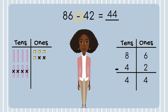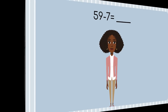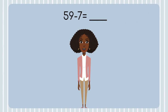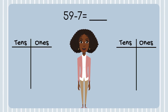Now, that wasn't too hard, was it? It can be super easy to subtract two-digit numbers. Let's practice some more. Let's look at another equation: 59 minus 7. I know I'll need two place value charts — one for my numbers, and the other to model my equation with place value blocks. I'll start by putting my numbers from my equation into one of my place value charts.